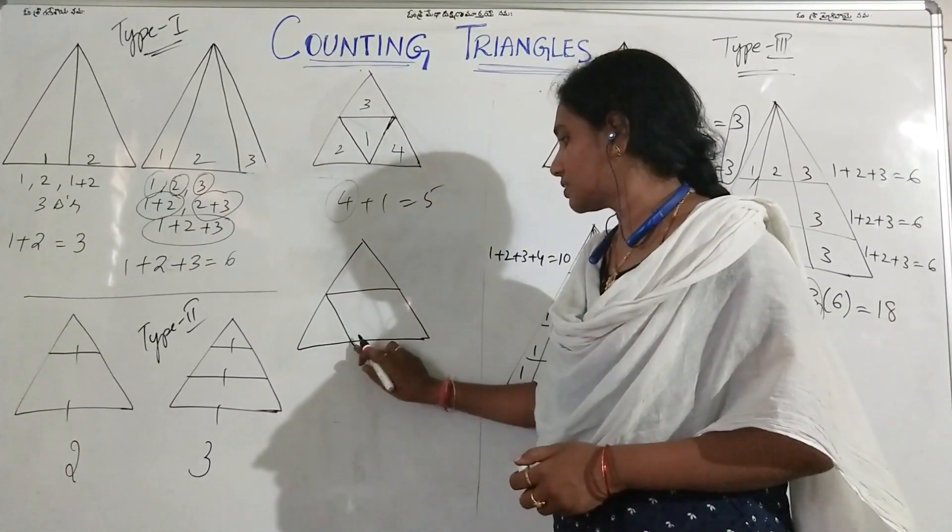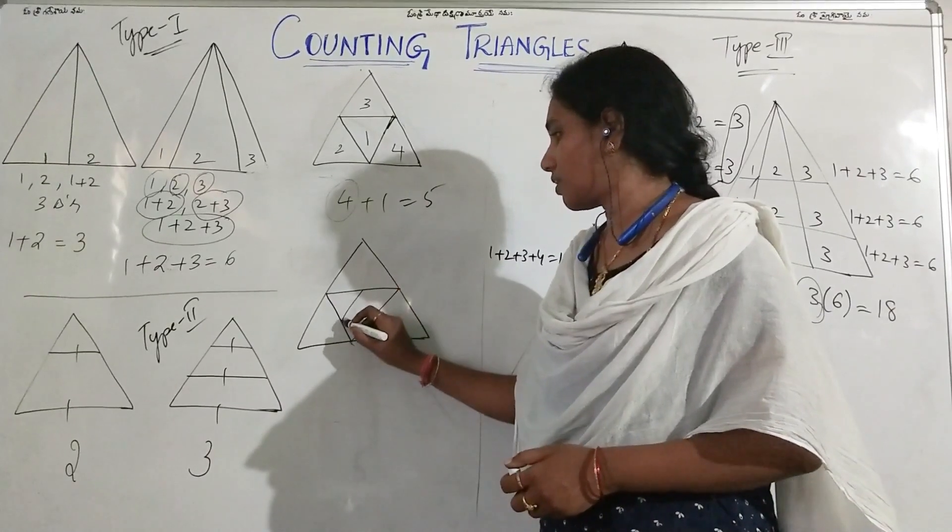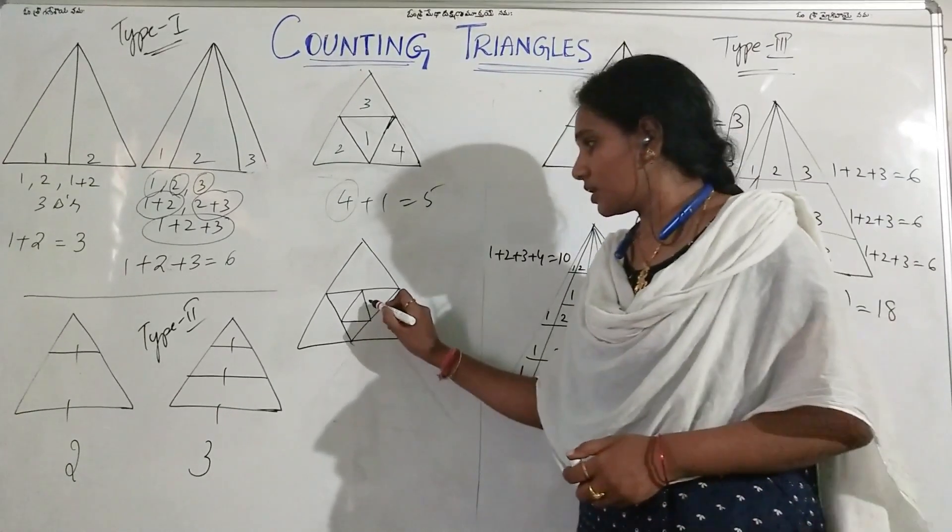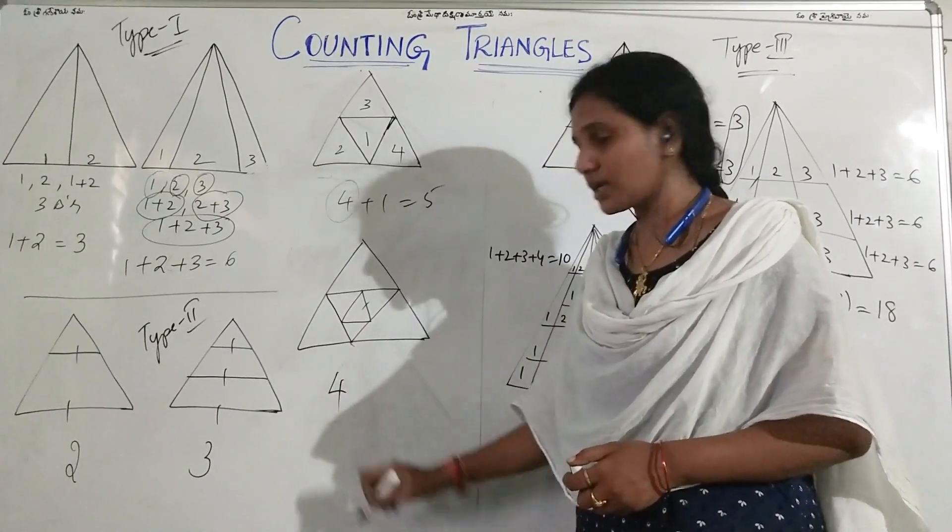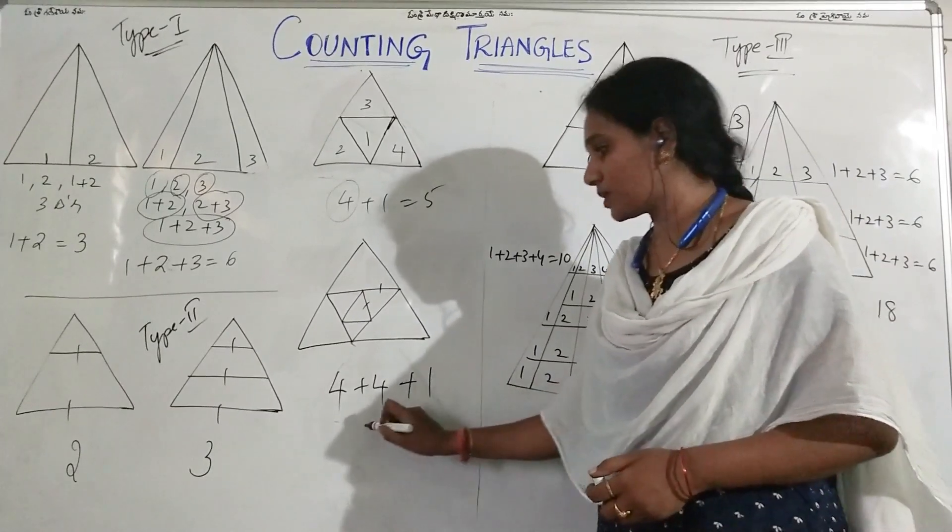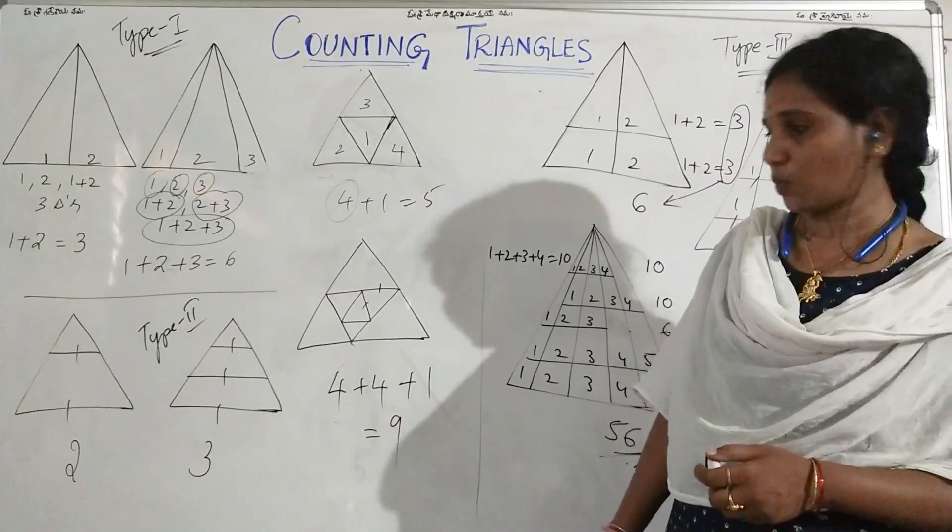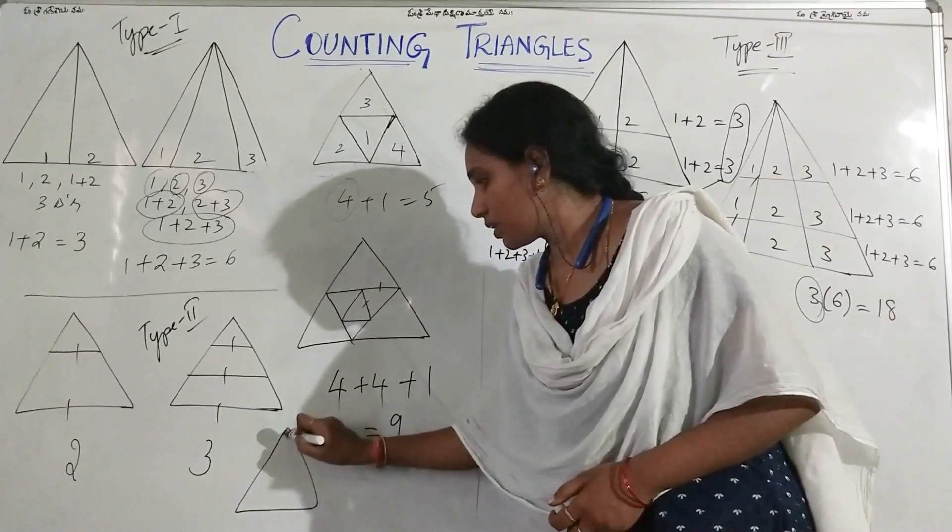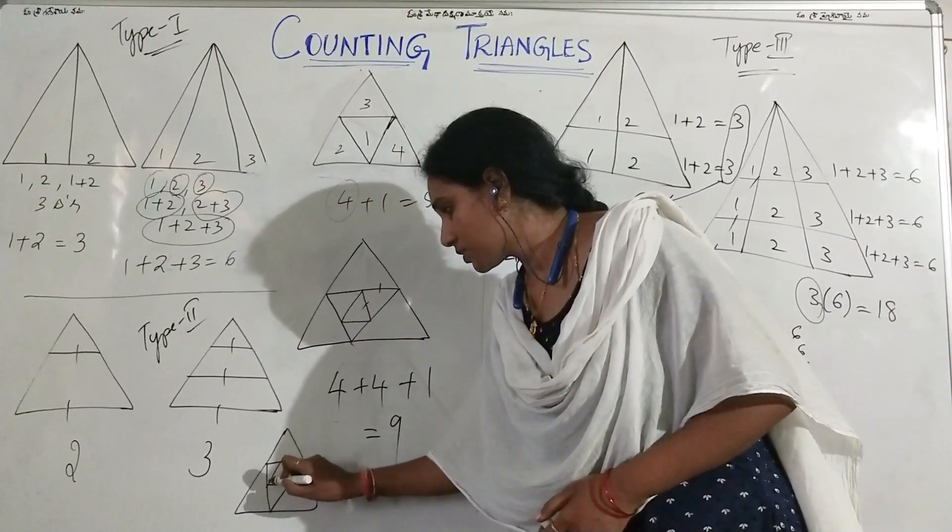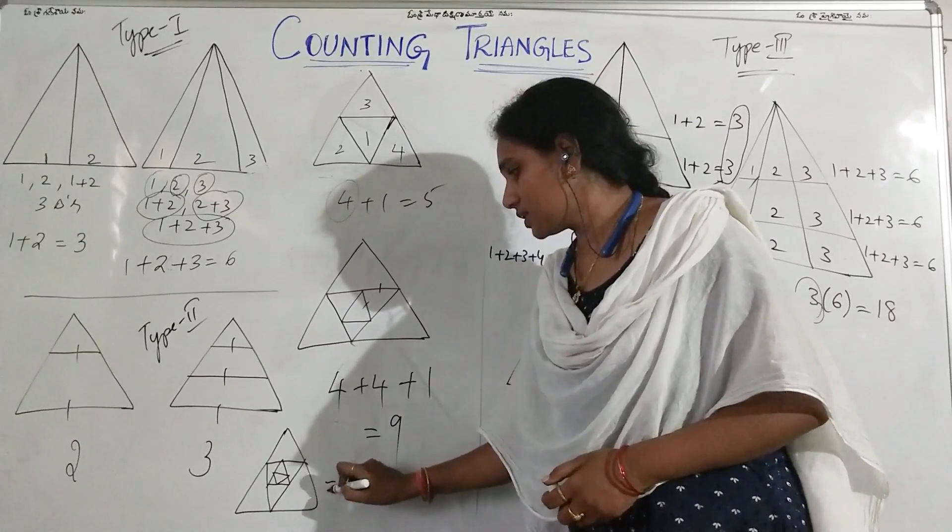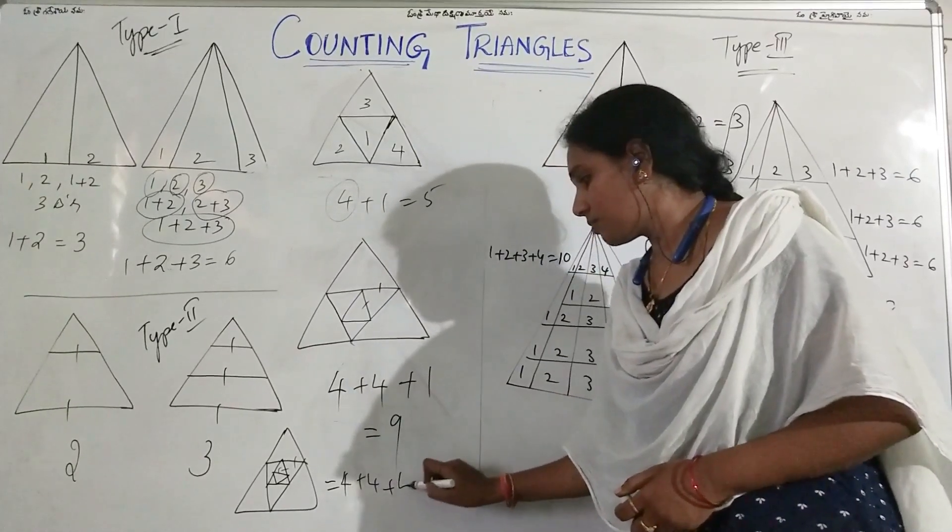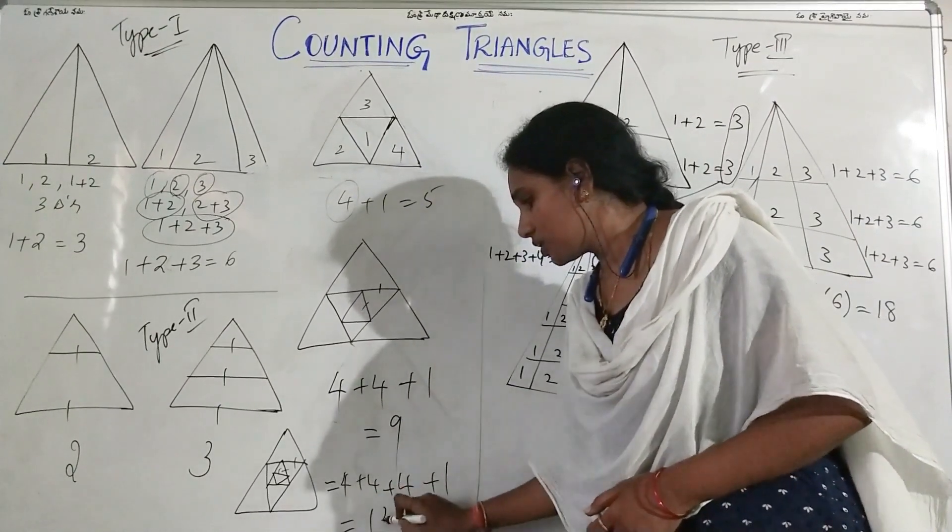Now let us move on to the bigger one. Guess the number of triangles for this figure now. You can try. Yeah, it is easy. So here for this inner triangle, four triangles are formed, and for this inner triangle it is four, and the outer triangle is one. So four plus four plus one which is nine. Now let us elaborate for one more inner triangle. Here it is four plus four plus four plus one, which is equal to thirteen triangles.